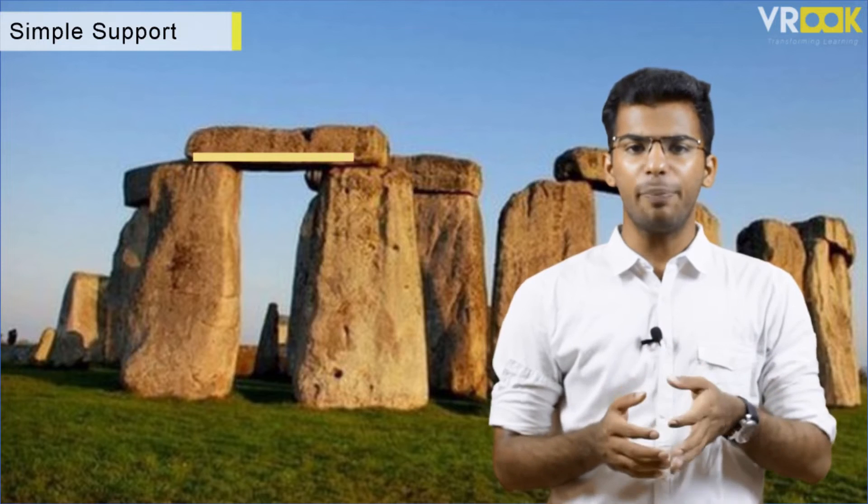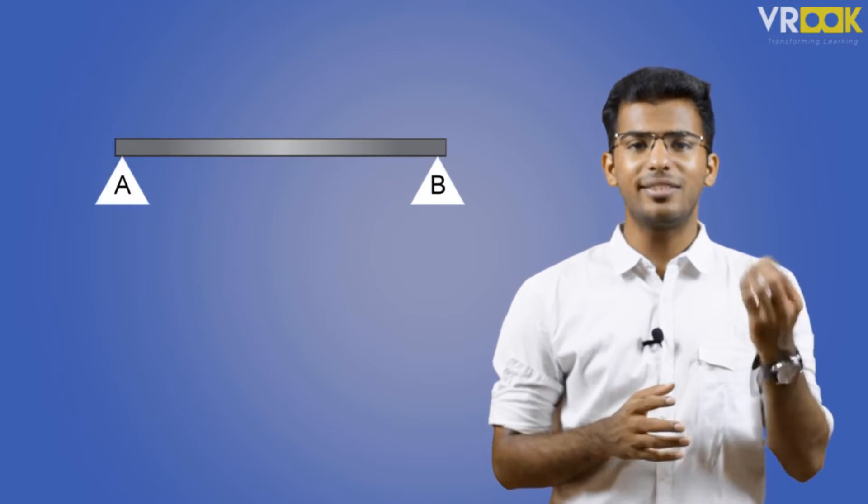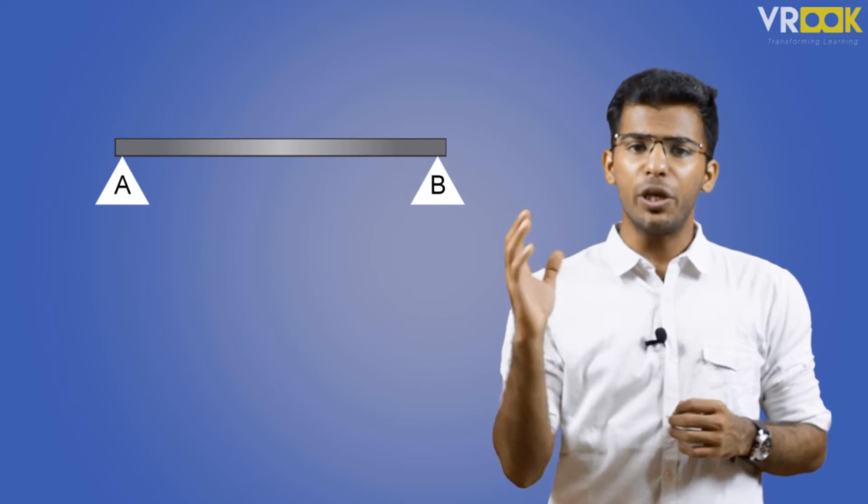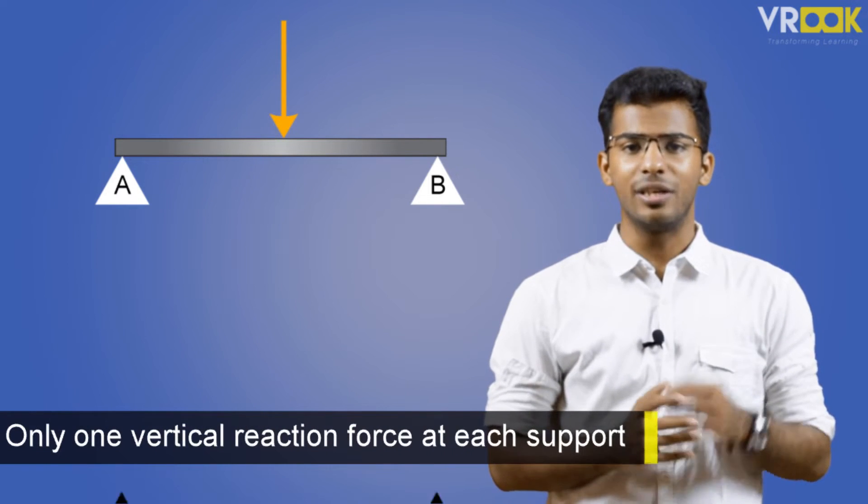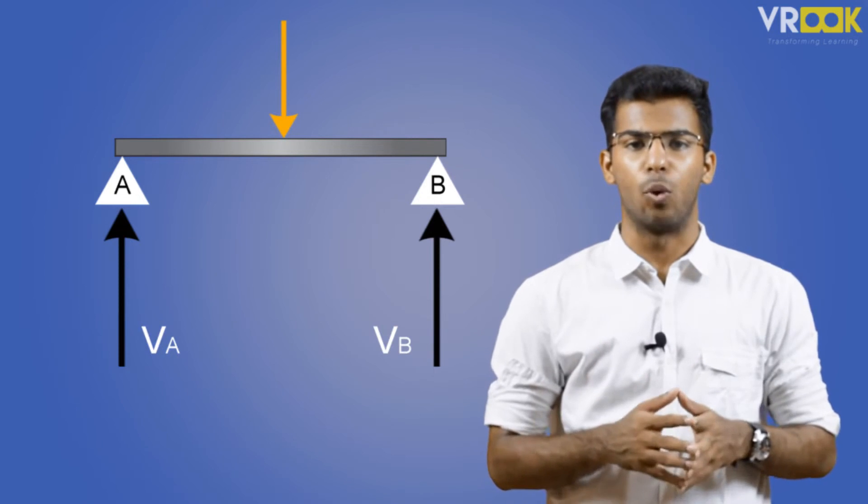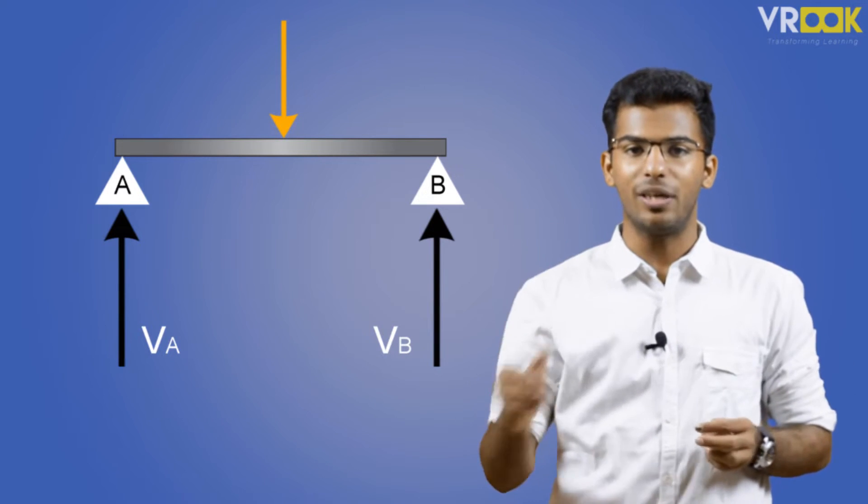First one is a simple support. For example, consider World Heritage Site Stonehenge. It is a simple support. Here a horizontal beam is simply resting on two vertical supports which are providing the reaction forces. It is a very simple type of support where the beam is simply resting on two supports or points. Here we have only one vertical reaction force at each support. This means if a beam is supported by a simple support, it is not allowed to move in the downward direction.